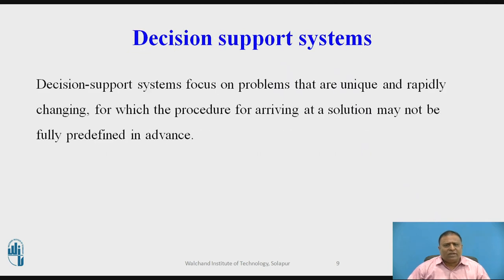The next one is the decision support system. Decision support systems focus on problems that are unique and rapidly changing, for which the procedure for arriving at a solution may not be fully predefined in advance. They try to answer questions such as: what would be the impact on production schedules if we were to double sales in the month of December?